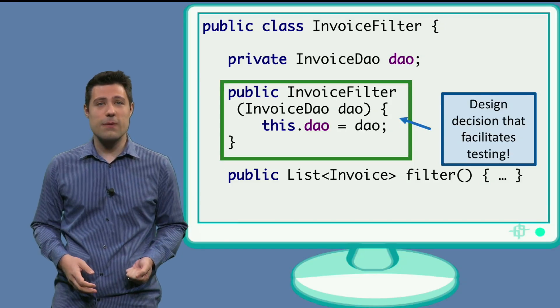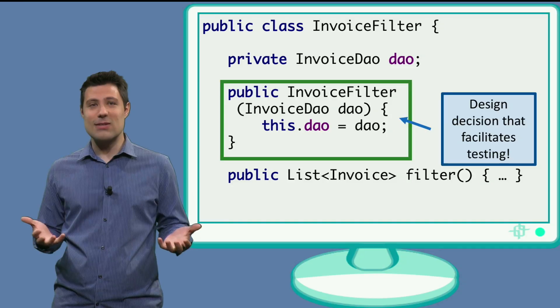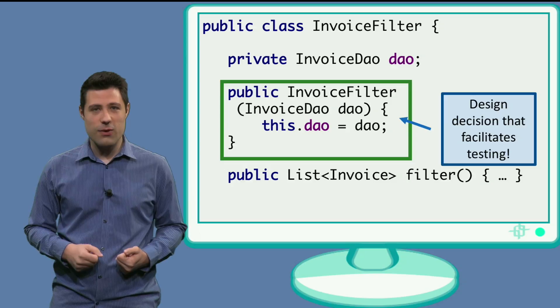And this is what we are doing here. So the invoice filter needs a hammer, or it needs a data access object class to work. And someone needs to inject, or pass this class to the invoice filter.